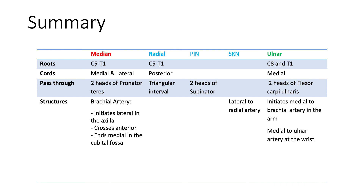This is the end of our teaching. The final slide summarizes important details of the nerves discussed today, including their root levels, the cords they branch from at the axilla, structures they pass through as they transition between compartments and levels of the upper limb, and structures they are closely related to. Thank you.